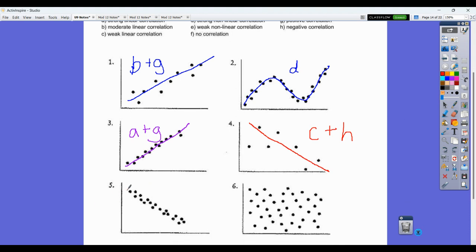We go down to this other one, and we have a line that we can draw through here. That looks pretty darn strong. I would say that's a strong linear correlation, so letter A. But it's also a negative correlation, so that's letter H that's there.